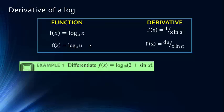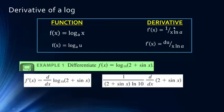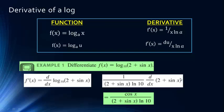Here's a composite function where we need to use the chain rule. We're going to take the derivative of log base 10 of (2 + sin x). We have 1 over the argument (2 + sin x) times the natural log of the base, which is 10. Then we take the derivative of the inner function: the derivative of 2 is 0, and the derivative of sin x is cosine, so we get cosine over (2 + sin x) times natural log of 10.